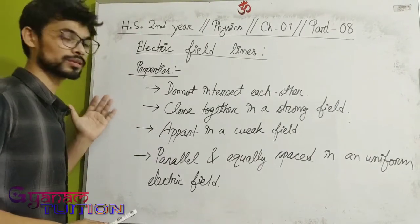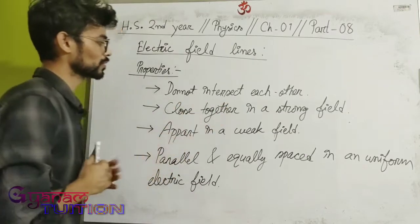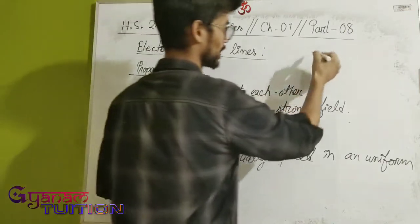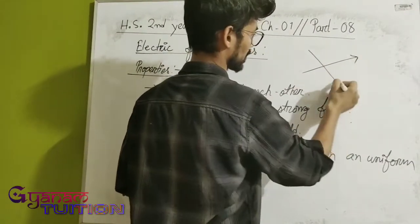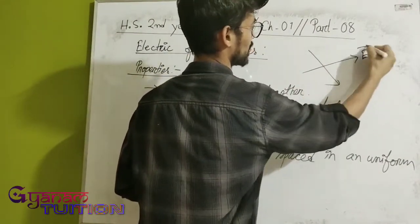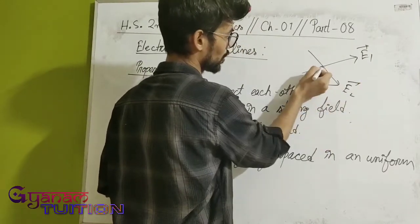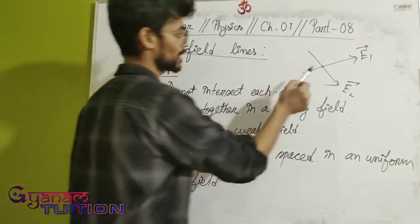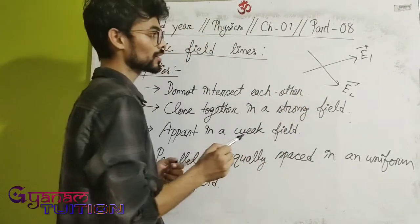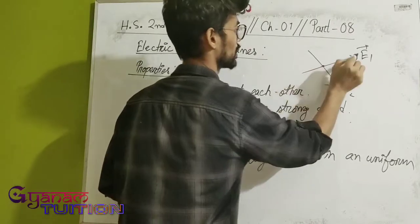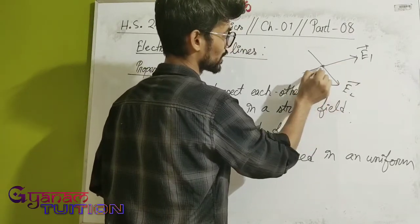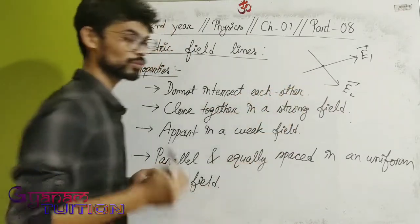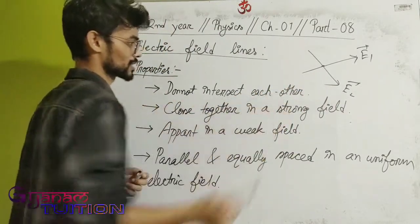First property: electric field lines do not intersect each other. If two field lines E1 and E2 were to intersect at a point, it would mean the electric field at that point has two directions simultaneously, which is not possible. Therefore, electric field lines never cross.